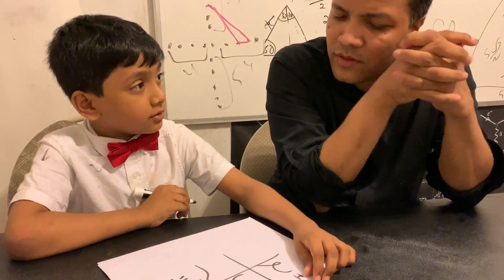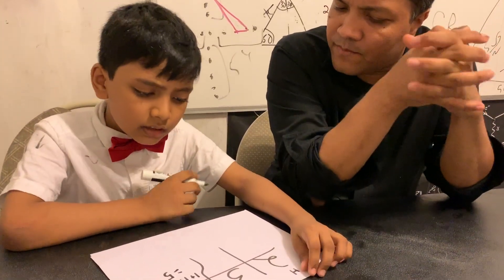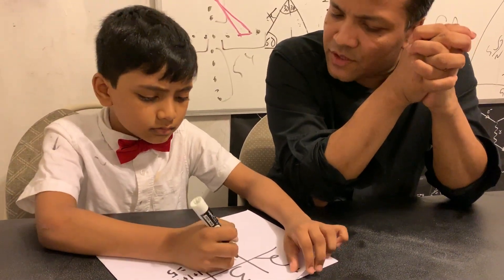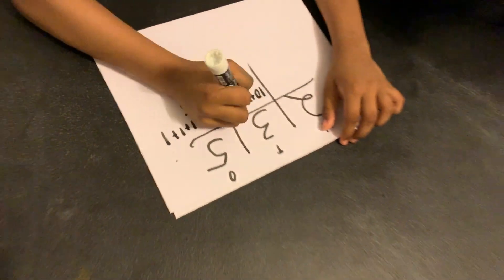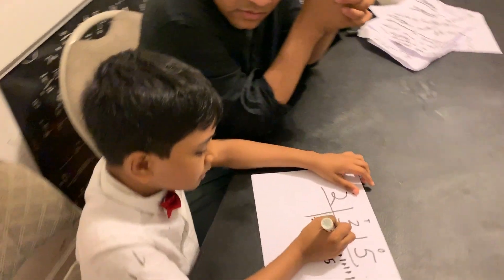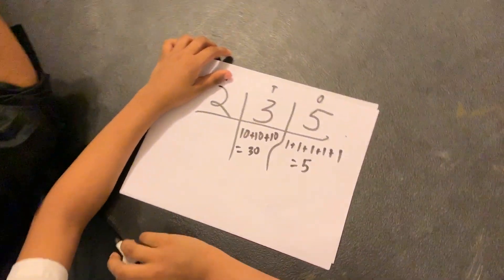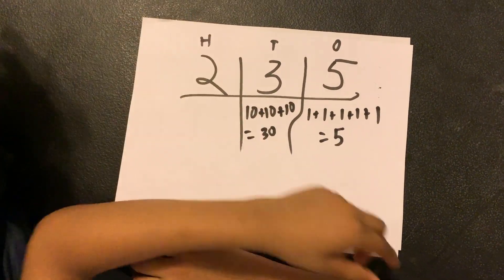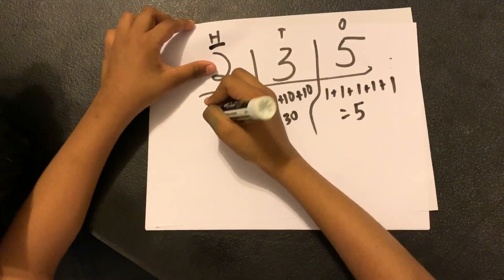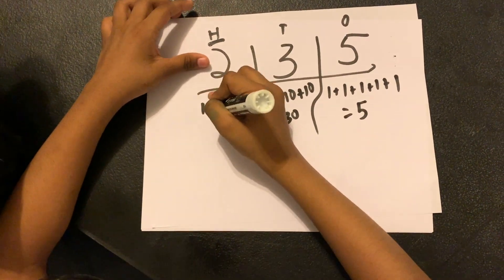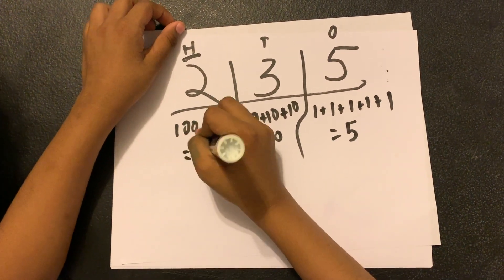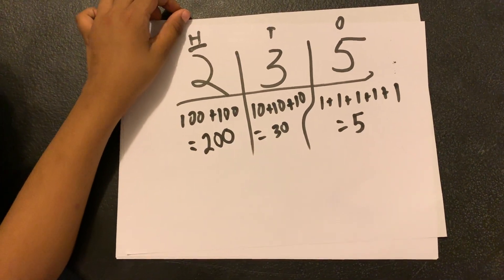Five groups of one. Now what do you call this? Three groups of ten - can you write three groups of ten in math? One ten, two tens, three tens, which would be equal to thirty. Then what should you call this? Two groups of hundreds - can you write it? One hundred plus one hundred, it's going to be two hundred. Two groups of one hundred.